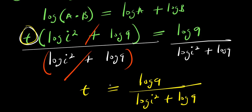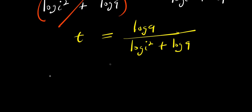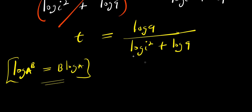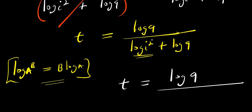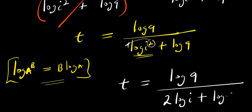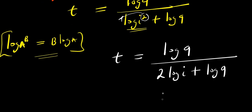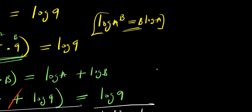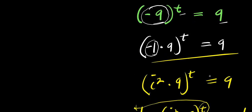That's not all — I can still apply the logarithm power property: log of a to the power of b equals b times log a. Applying this to log i squared, the 2 comes in front, giving us the final answer for method 1: t equals log 9 divided by 2 times log i plus log 9.